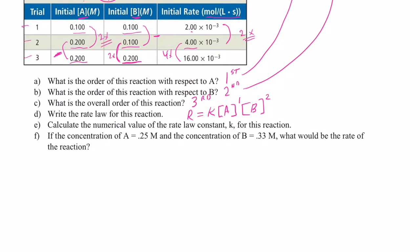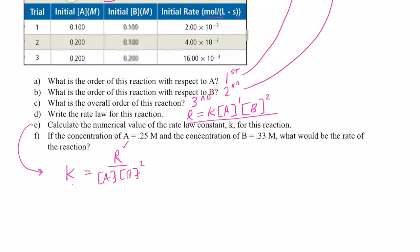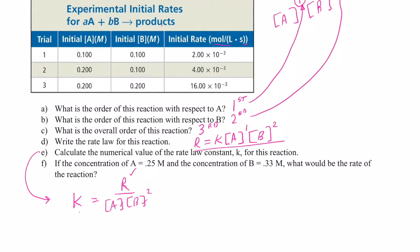Now for the numerical value of the rate constant, we need to solve the rate law for K. K equals R divided by the concentration of A times the concentration of B squared. We need an experiment where we know the rate, the concentration of A, and the concentration of B — then we plug those values in to solve for our constant and figure out its units. I like to use the first experiment.